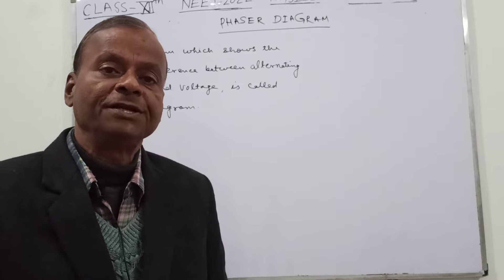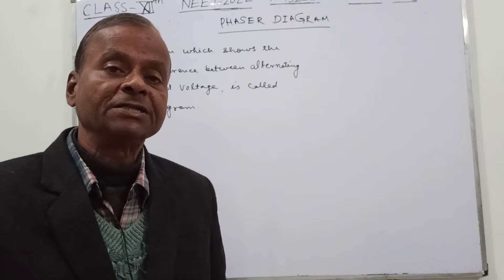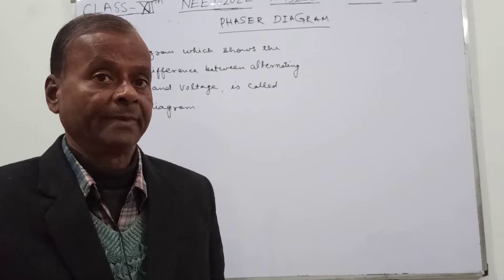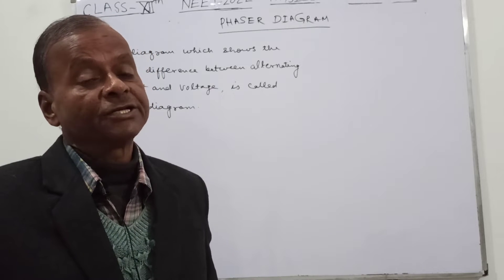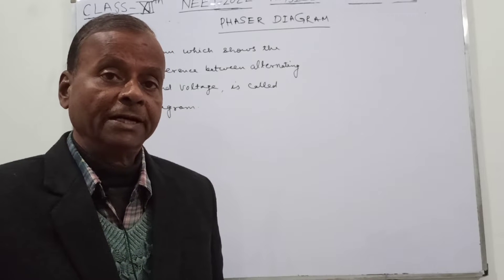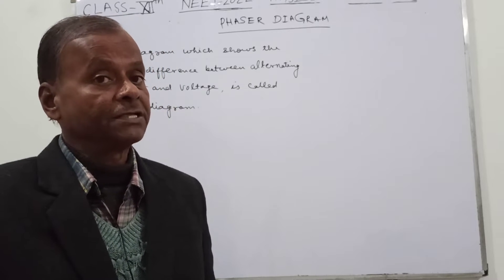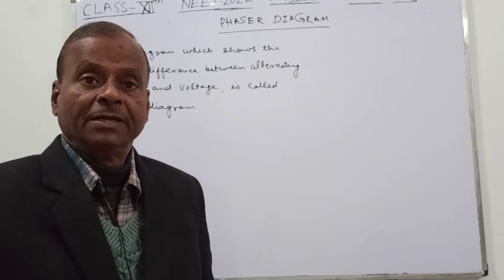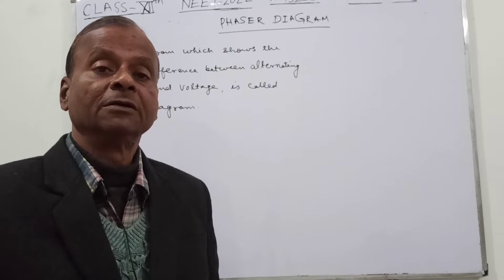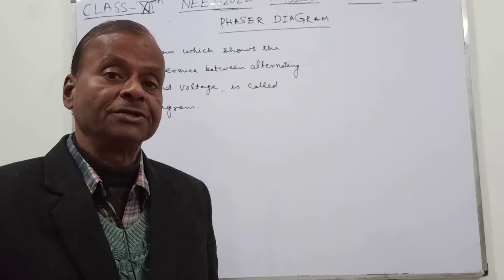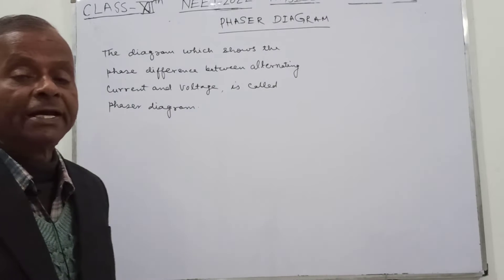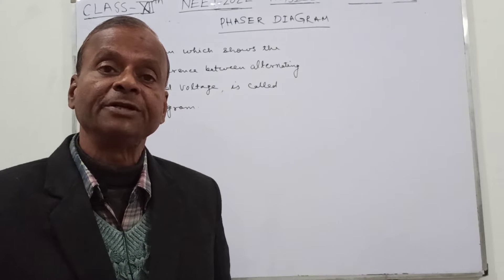In the case of DC, the voltage and current are in the same phase, so we have no phasor diagram. But in the case of AC, since this is having a frequency and whenever it is passed in the circuit, there is a phase difference between the current and the voltage. This phase difference depends upon the elements — which kind of elements have been used.